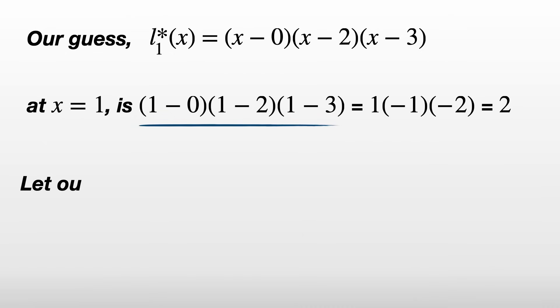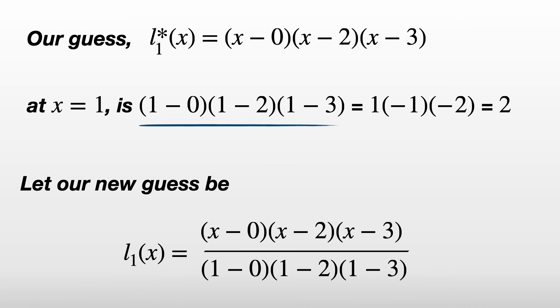Look, let our new guess be L_1(x) equals (x - 0)(x - 2)(x - 3) divided by (1 - 0)(1 - 2)(1 - 3). And we've got it. I've removed the asterisk because this is in fact the correct formula.